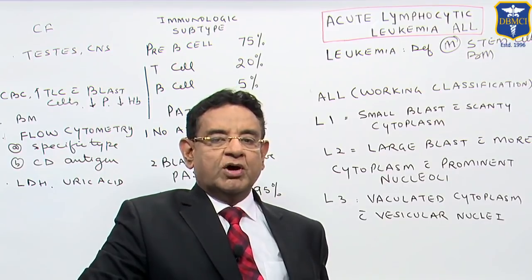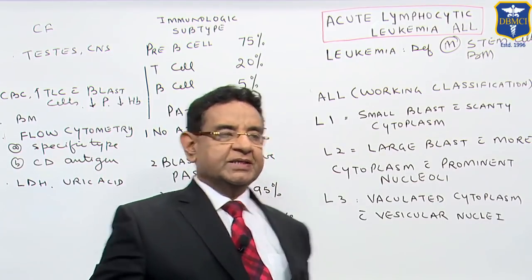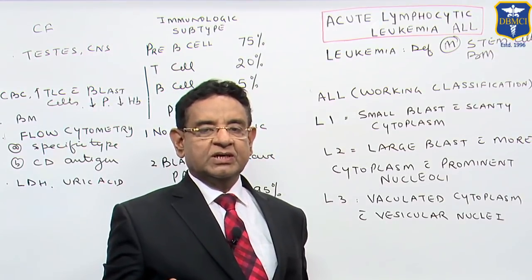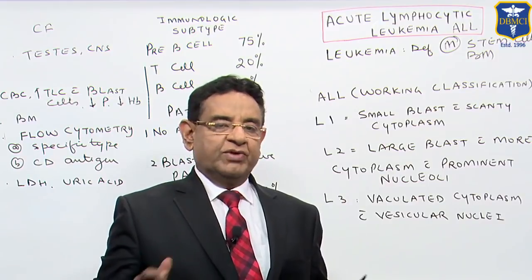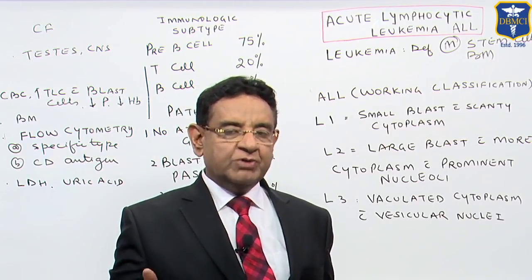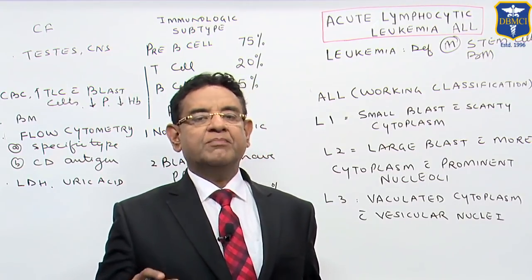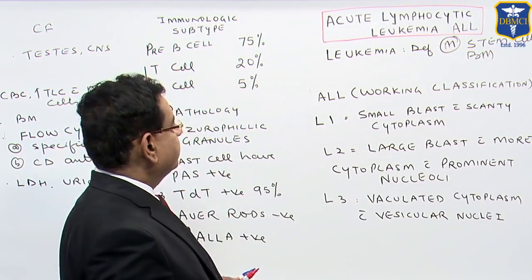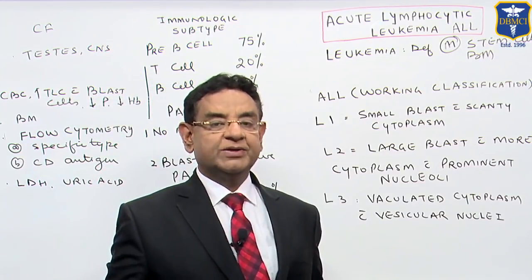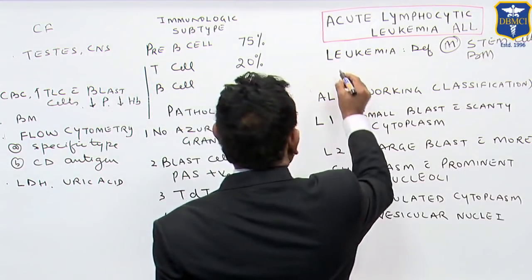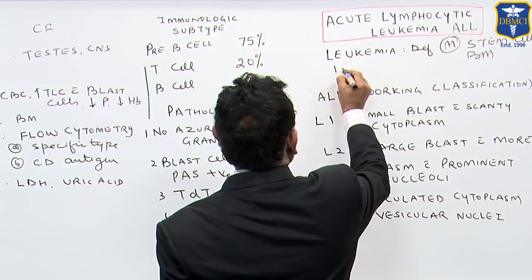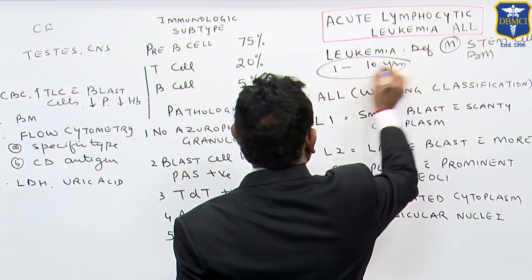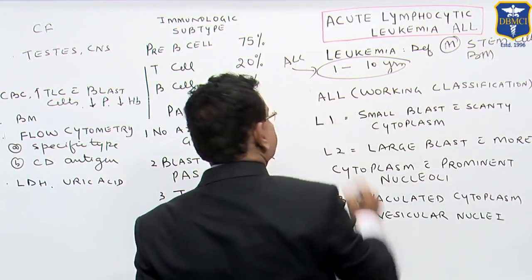When we are talking about acute lymphocytic leukemia, primarily lymphocytic cells or lymphoid cells are involved. When we talk about acute myeloid leukemia, myeloid cells are primarily involved. The usual age group for ALL is children between 1 to 10 years.